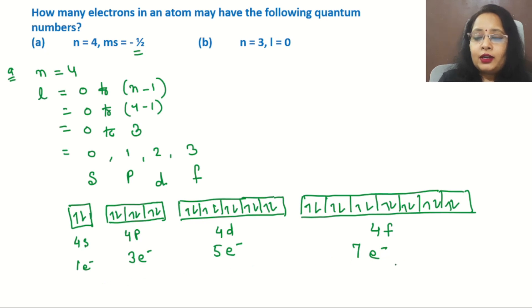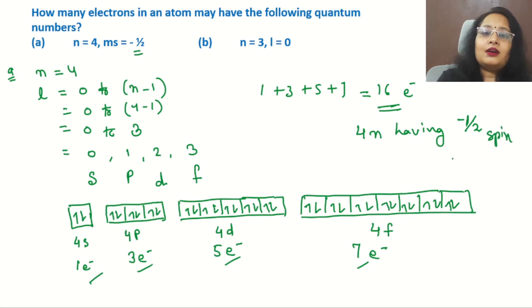Now we can calculate and add all the negative spin electrons. That will be 1+3+5+7. Adding all this together: 1, 3, 5, and 7 becomes 16 electrons. So this is our answer: 16 electrons in n=4 having ms=-1/2 spin. This is the answer to the first part, very easy to calculate.